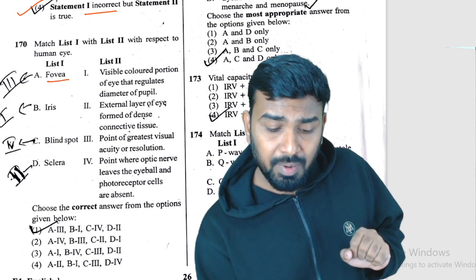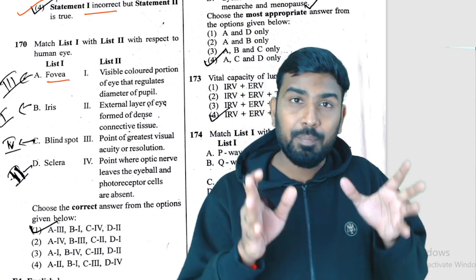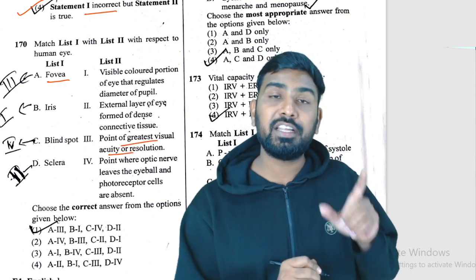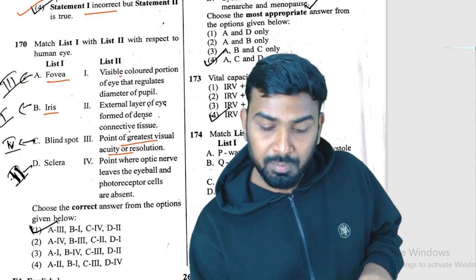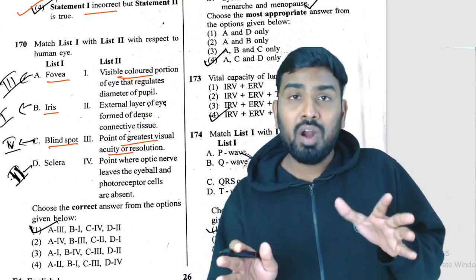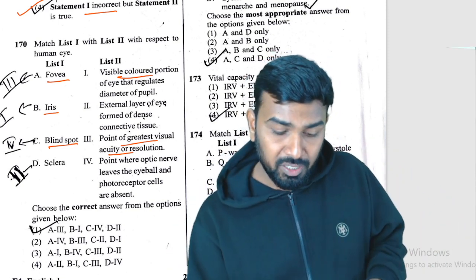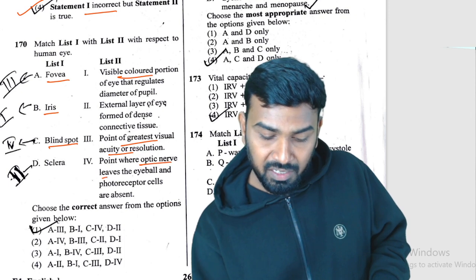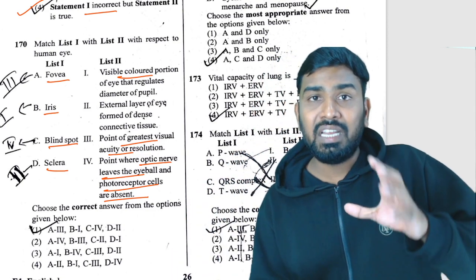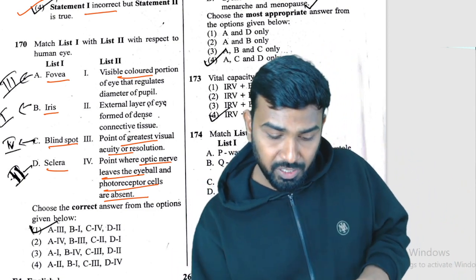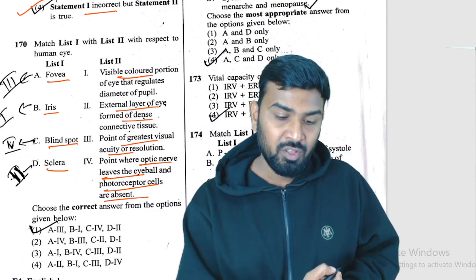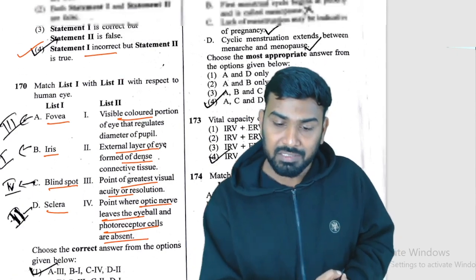Question 170: anatomy of the eye. Fovea (macula lutea) — greatest visual acuity. Iris — visible colored portion. Blind spot — where optic nerve leaves and photoreceptors are absent. Sclera — outermost layer with dense connective tissue. So D-2 is the match for external layer of eye with dense connective tissue. Q170 complete.